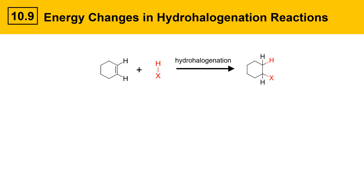On this slide, we've got an example of a hydrohalogenation reaction between cyclohexene and HX, where X could be Cl or Br. The energy changes in that reaction are governed by this equation: delta G equals delta H minus T delta S. Delta G is the overall change in energy, delta H is the enthalpy change or the heat part of energy, T is temperature, and delta S is change in entropy — that's disorder. We'll look at each one of these terms and decide whether it favors products or not.